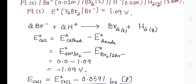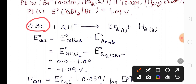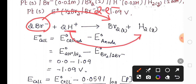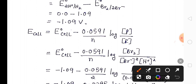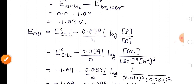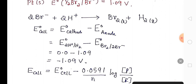There are two Br⁻ each losing one electron, so two electrons are involved. Or you can say hydrogen ion gains one electron, meaning two hydrogen ions gain two electrons to form H₂. So the number of electrons n is equal to 2.